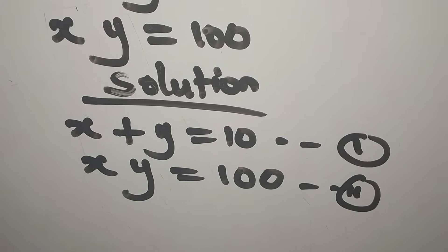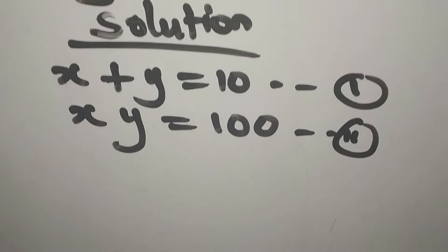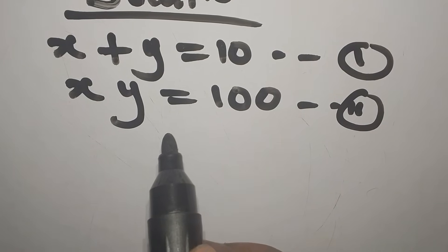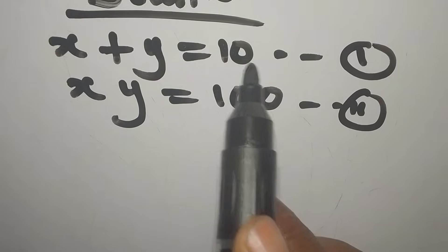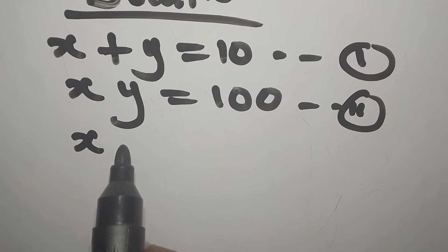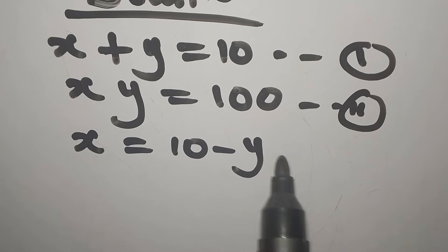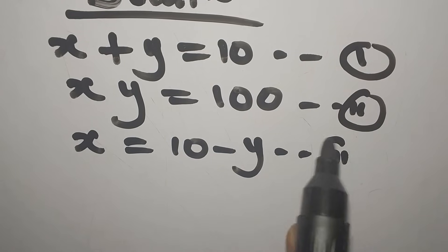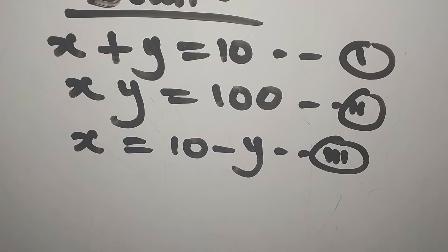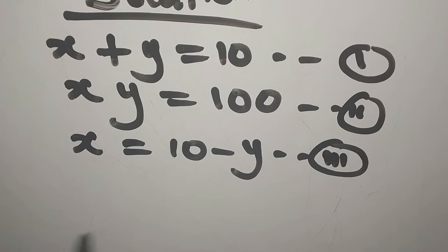To provide the solution we are going to have an Equation 3, and that will come from Equation 1. So x from Equation 1 will be equal to 10 minus y. We'll call this Equation 3.